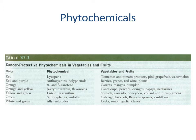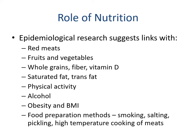Phytochemicals such as lycopene, anthocyanins, lutein, and sulforaphane are found in fruits and vegetables. These aren't traditional micronutrients with known quantities like vitamins and minerals, but they play a role in health and cancer prevention. Research suggests links between cancer risk and red meats, fruits and vegetables, whole grains, fiber, vitamin D, saturated fat, trans fat, physical inactivity, alcohol, obesity, high BMI, and food preparation methods including smoking, salting, pickling, and high-temperature cooking.